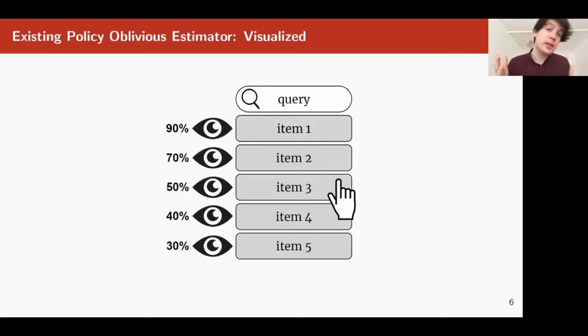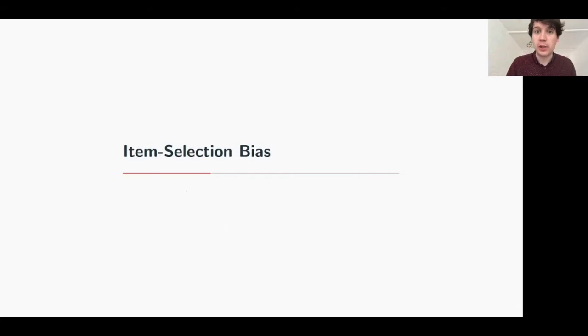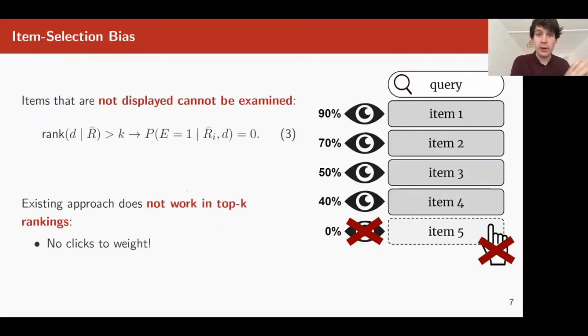Now, this is unbiased as long as you can show every item in the ranking. And this is exactly where item selection bias comes, the problem that we're addressing in this paper. When you have a top-k ranking setting, there are items which have a 0% chance of being examined. For instance, item 5 in this example on screen. There are no clicks on item 5 that you can re-weigh, because no one can click on item 5 because it's not on screen. As a result, the previous approach is no longer unbiased. This is what we call item selection bias.